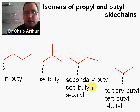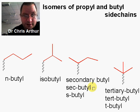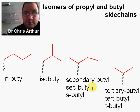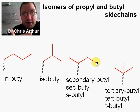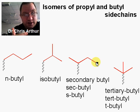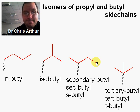These groups are very common and will crop up, so they're worth memorizing. To summarize: we have n-propyl, isopropyl, n-butyl, isobutyl, sec-butyl, and tert-butyl. Those are the four isomers of butyl side chains, plus the two propyl variants.